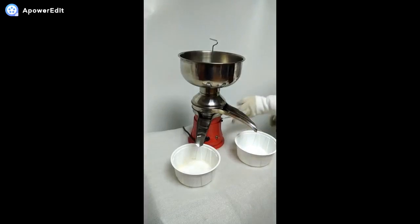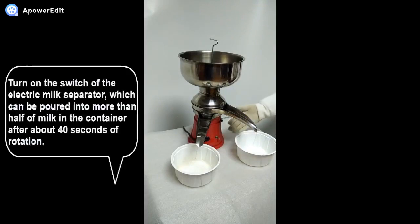Press down the separator switch. Turn on the switch, which can be poured with more than half of milk in the container after about 40 seconds of rotation.